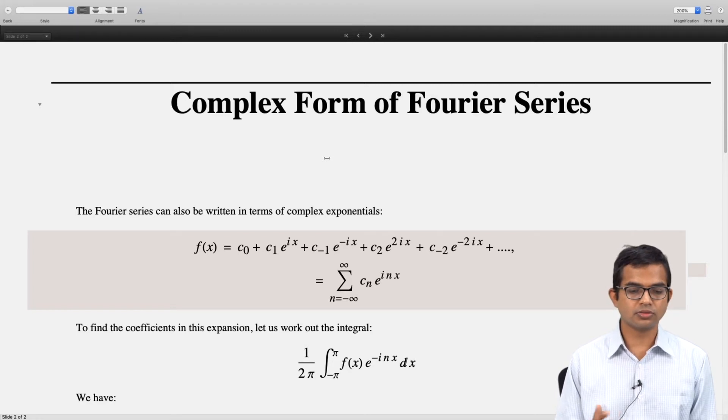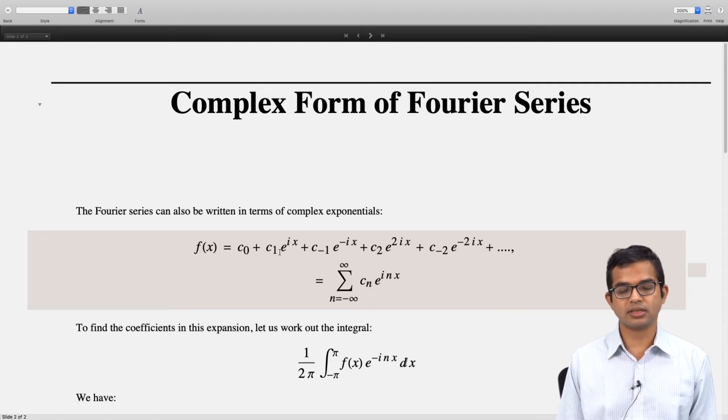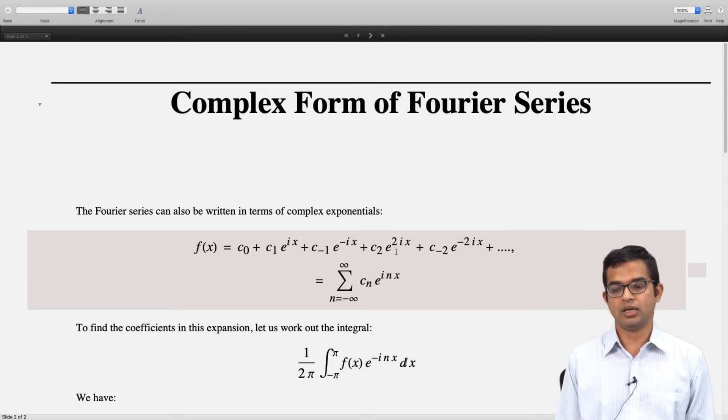You are given a periodic function with period 2π. We are going to write f(x) as c₀ + c₁e^(ix) + c₋₁e^(-ix) + c₂e^(2ix) + c₋₂e^(-2ix), and so on.